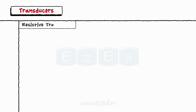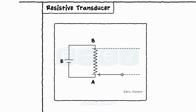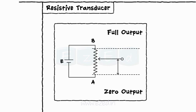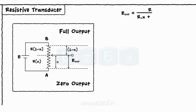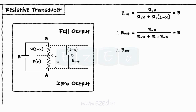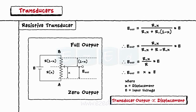Let's start with a resistive transducer. A circuit of a resistive transducer is as shown. A slider is free to move from end A to end B. At end A, we get zero output, and at end B, we get full or maximum output. The output voltage is obtained between position A and the slider position. Using the voltage divider rule, E out equals X into E, where X is the displacement and E is the input voltage. Thus, the output of a transducer is proportional to the displacement.